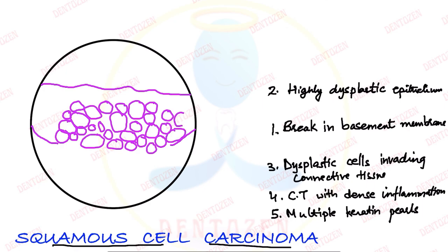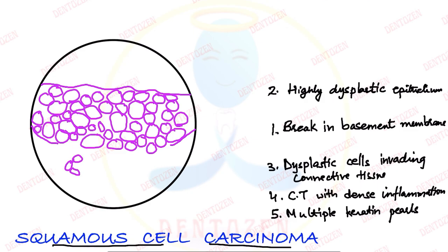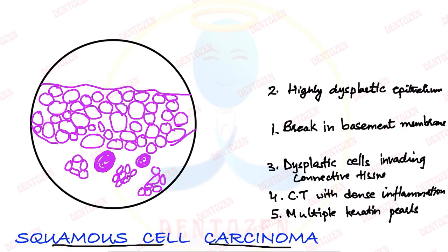Now these epithelial cells are invading into the underlying connective tissue. These cells are lying in islands or sheets of cells and can form different arrangements. They are of different sizes and shapes. Along with that, we can see keratin pearls, which are concentric arrangements of keratin. We can see keratin pearls here and also some keratin pearls within the epithelium.